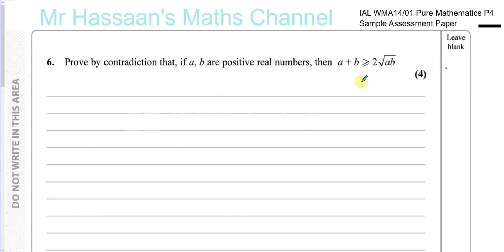Now, prove by contradiction that if A and B are positive real numbers, then A plus B is greater than or equal to two times the square root of AB.